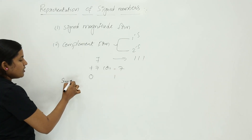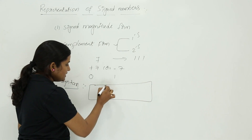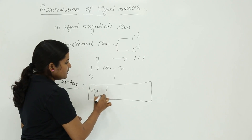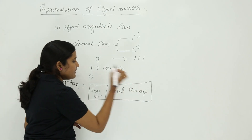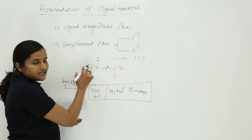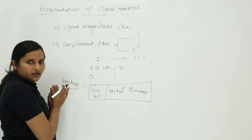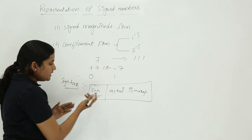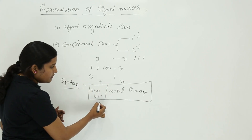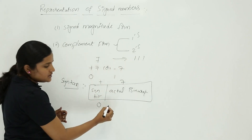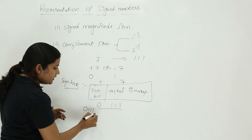The syntax of signed magnitude form is: sign bit followed by the actual binary. For example, to represent 7 the actual binary is triple 1 (111). To represent plus 7 in signed magnitude form, the sign bit for plus is 0 and the actual binary of 7 is 111. So totally you take 0111.